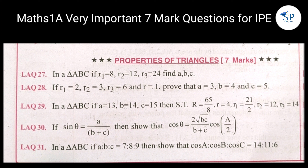If you want extra, you can see: sinθ = a/(b + c) and show that cosθ = 2√(bc)/(b+c) · cos(A/2). This is also a change. And in triangle ABC, if a = 7, b = 8, c = 9, then show that cosθ = 2√(bc)/(b+c) · cos(A/2). If we have many properties of triangle, it is very important and has so many questions.